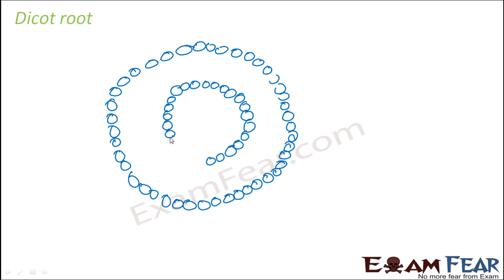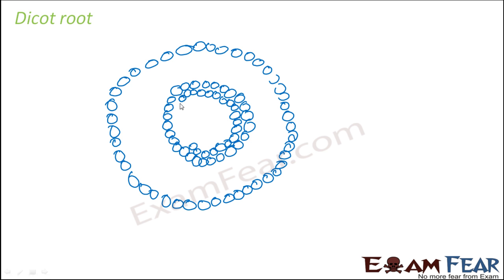Inside the endodermis you have the pericycle. The pericycle is made up of parenchyma cells with thick walls — that is the only difference between these parenchyma cells and the parenchyma cells present between the epidermis and endodermis, which have thin walls. So this is the pericycle. Now let us look at how xylem and phloem are arranged inside the pericycle.